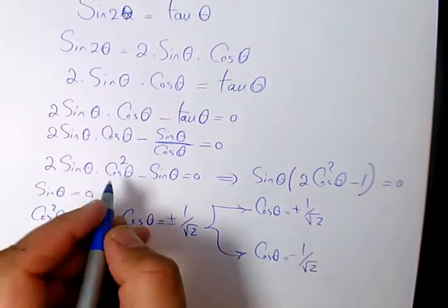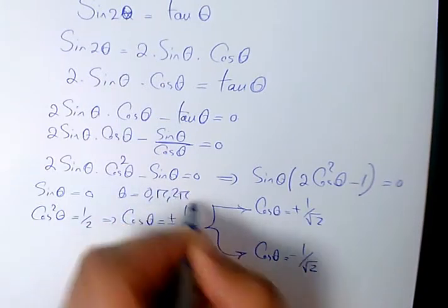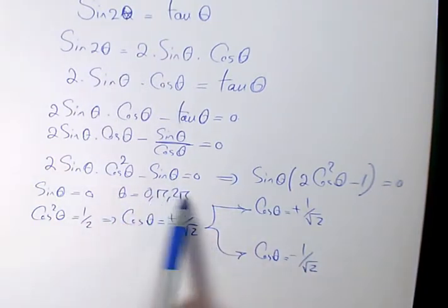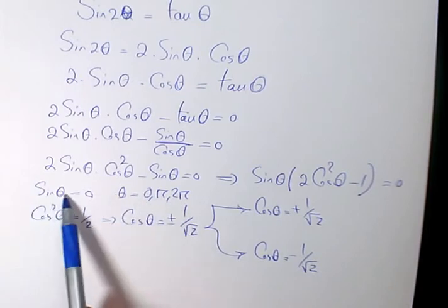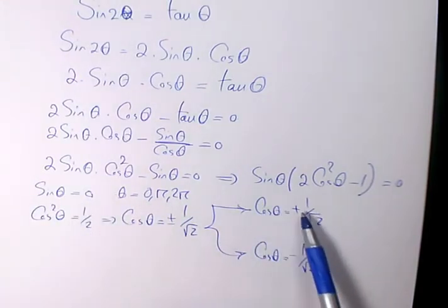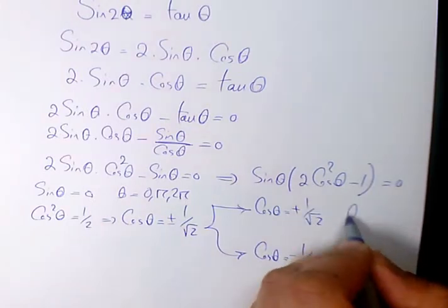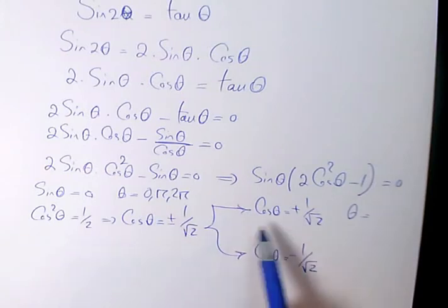So sin(θ) = 0, θ is going to be 0, π, 2π. We had it many times before. So these are the possible answers when sin(θ) = 0. And the other two answers are going to be when it's positive 1/√2, and the other one is negative 1/√2.